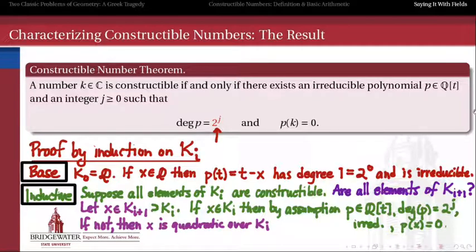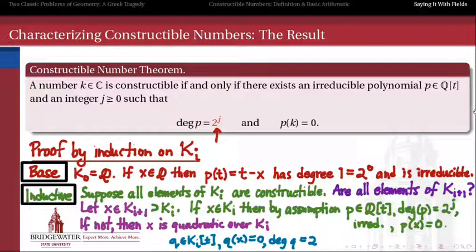Then by our assumption, x is a quadratic number over k sub i. In other words, it satisfies, it is a root of a quadratic polynomial whose coefficients are in ki. In other words, there's a quadratic polynomial with coefficients in ki of which x is a root, so we'll call that q.